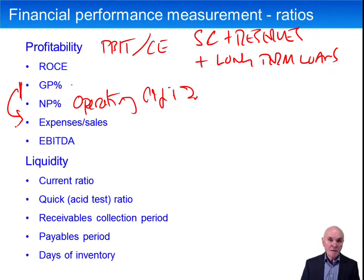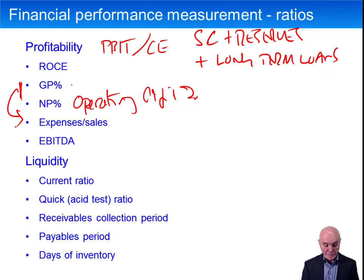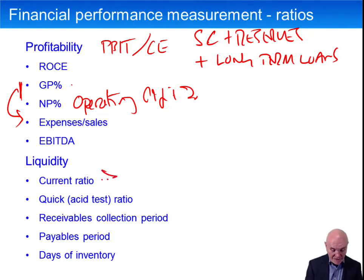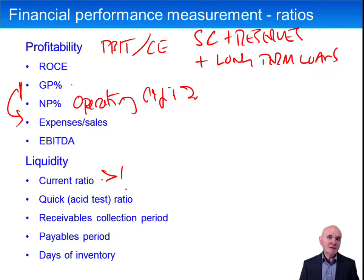Liquidity looks at whether the company is going to be able to pay its way and pay its liabilities as they fall due. The current ratio is current assets over current liabilities. By and large, people like to see that a bit over one, although it depends on the type of business. If you're renting lots of properties you can plan cash flows well and live with quite a low current ratio.